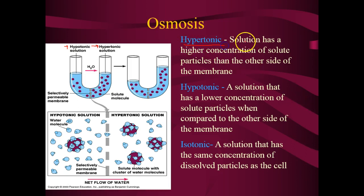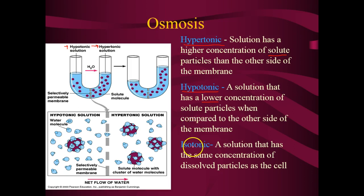Hypertonic is a solution that has a higher concentration of solute particles than the other side of the membrane. If you're hyper, you have more energy — more solute. Hypotonic means a lower concentration of solute particles compared to the other side — hypo is the opposite of hyper, so very low. Isotonic is basically equilibrium — it refers to two sides having the same solute concentration. Just like an isosceles triangle has two equal sides, isotonic means equal concentrations dissolved on both sides of the membrane.